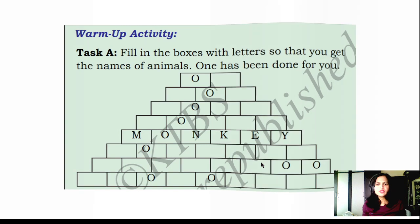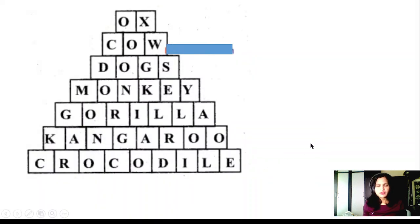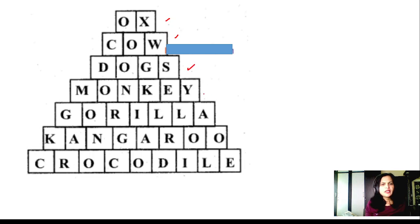The first one is ox — O X. Second one: C O W — cow. D O G S — dogs. M O N K E Y — monkey. G O R I L L A — gorilla. K A N G A R O O — kangaroo. C R O C O D I L E — crocodile.